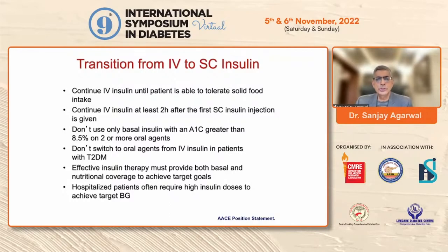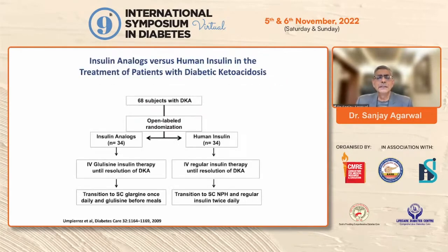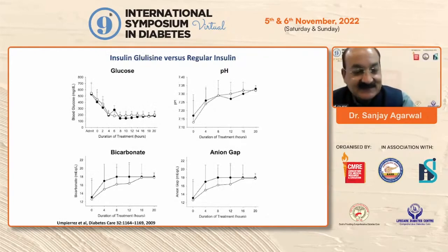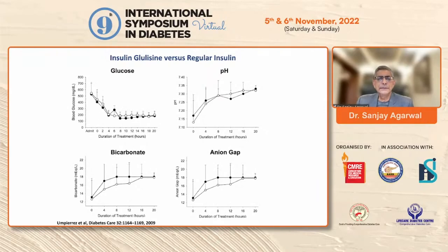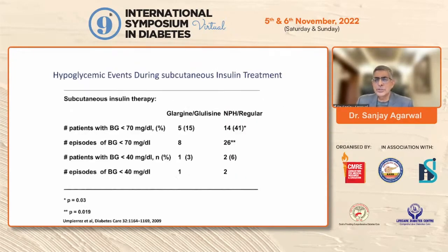Additional transition rules: don't use only basal insulin when HbA1c is greater than 8.5% or the patient is on two or more oral agents; don't switch from IV to oral agents; effective insulin therapy must provide both basal and nutritional coverage. The DECAF trial compared IV insulin analogues versus regular human insulin and found no difference in resolution rates, but transition to subcutaneous analogues does offer a lower hypoglycemia rate advantage.